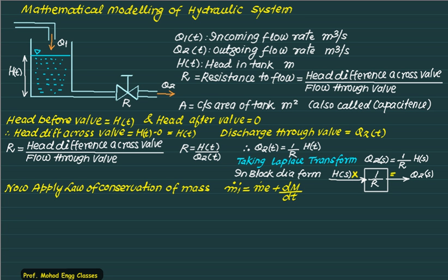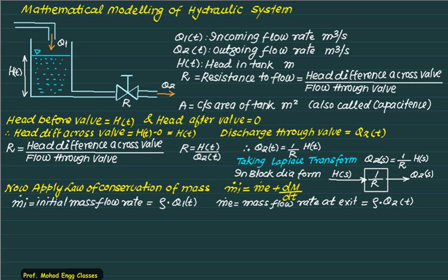We also know that if we apply the law of conservation of mass, the sum of mass at inlet is equal to sum of mass at outlet plus rate of change of mass of the control system. M dot I is the initial mass flow rate defined as the density multiplied by volumetric flow rate. Density is kg per meter cube and the flow rate is meter cube per second so that is kg per second.